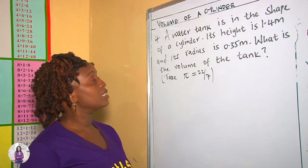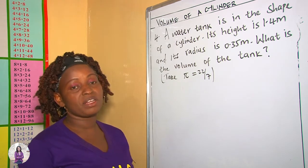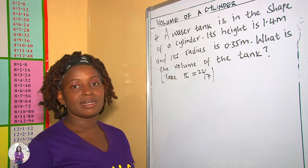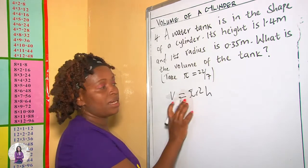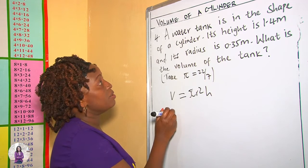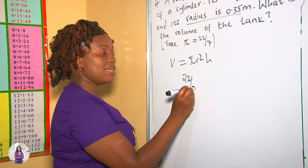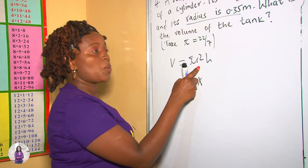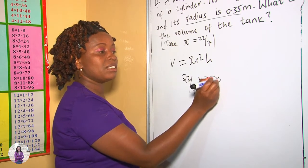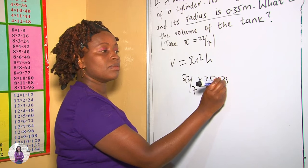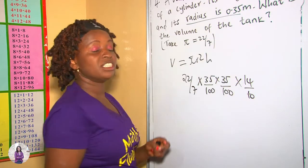In our fourth example, we are told that a water tank is in the shape of a cylinder. Its height is 1.4 meters and its radius is 0.35 meters. What is the volume of the tank? Again, we apply the formula: volume of a cylinder equals pi r squared times height. We are given the radius and the height. Our pi is 22 over 7, multiplied by r squared.